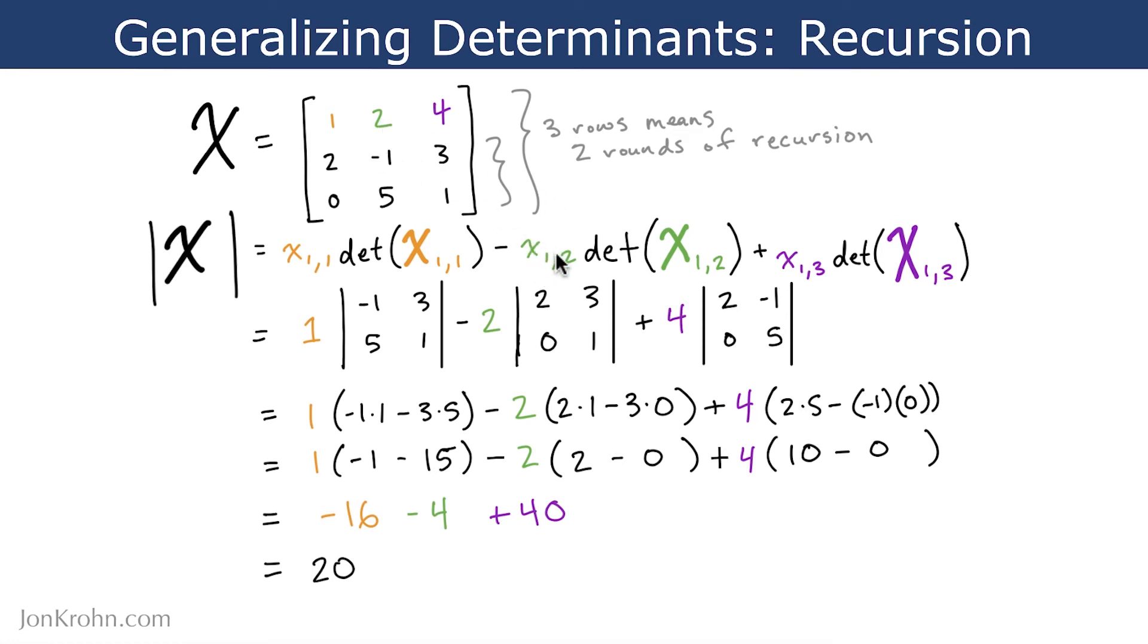So the value X12 is this value 2 here. And then the matrix X12 is 2, 0, and 3, 1, 2, 0, and 3, 1, because these are the elements that aren't in the same row or column as the 2, X12.